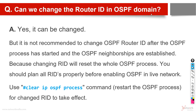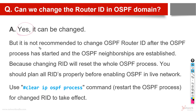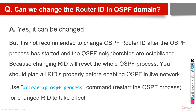Can we change the Router ID in the OSPF domain? Yes, it can be changed — as I just demonstrated. However, if you change it, you must clear the OSPF process, which brings down all OSPF neighborships, adjacencies, and routes will fluctuate. So you must plan in advance in a production environment. It is not recommended to change major OSPF configurations like the Router ID after the OSPF process has started and neighborships have been established, because changing it will reset the whole process and bring down the network.